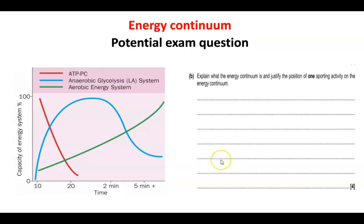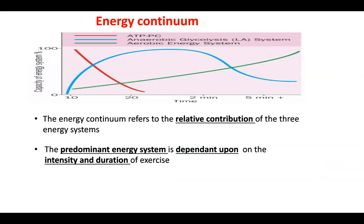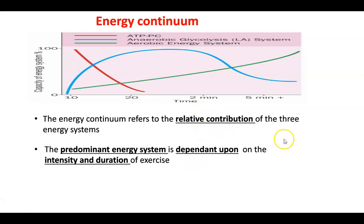For your Cornell notes, we're concentrating on intensity and duration. A potential exam question is: explain what the energy continuum is and justify the position of one sporting activity on the energy continuum. The full answer would be: the energy continuum refers to the relative contribution of the three energy systems, and the predominant energy system is dependent upon the intensity and duration of the exercise.